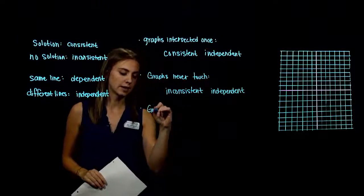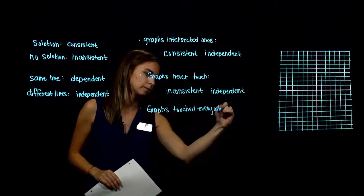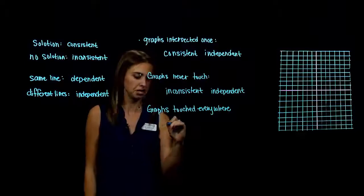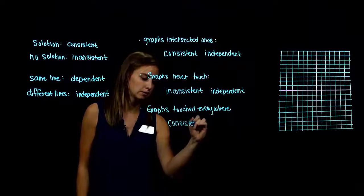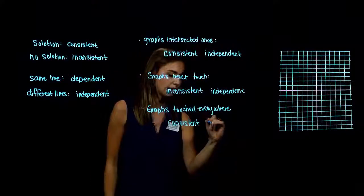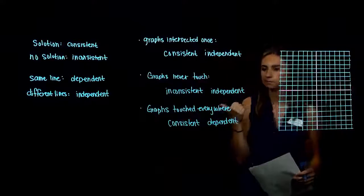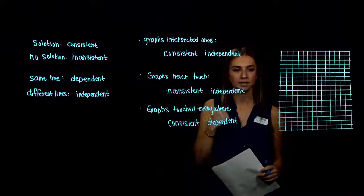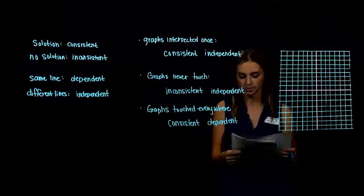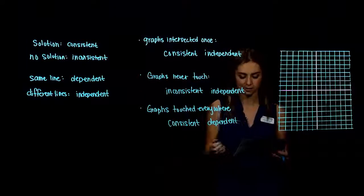Case 3: the graphs touched everywhere because the lines were exactly the same, just scaled. We had solutions, so the system is consistent. The lines depend on each other — they are the same. Classification: consistent and dependent. Now try the next three examples: graph them, solve them, and classify each system.